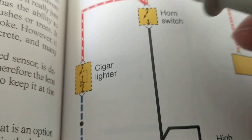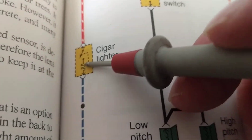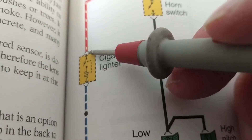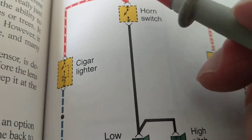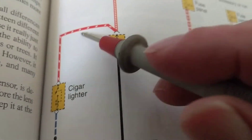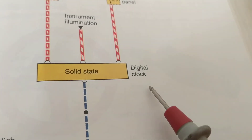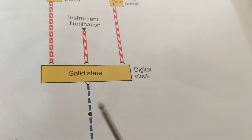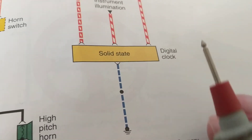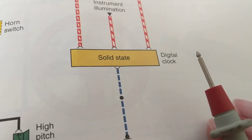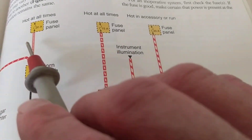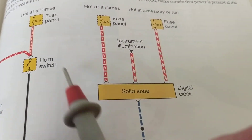The heating element symbol — all you do is close the switch when you put the cigarette lighter in and it will work. The digital clock is on all the time because battery voltage is always present.